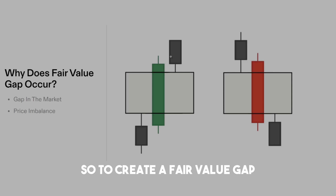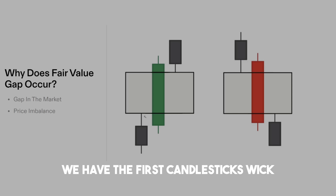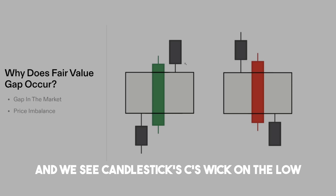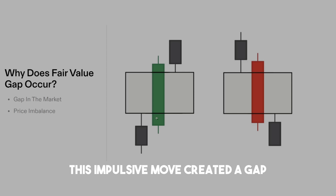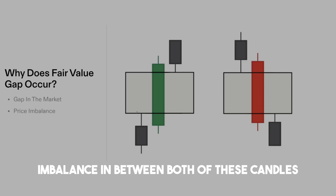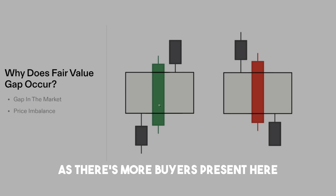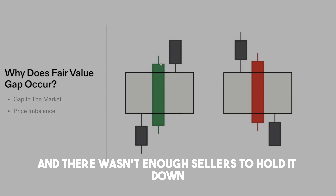To create a fair value gap, we need three candlesticks: A, B, and C. For a bullish fair value gap, we have the first candlestick's wick where it closed on the high and candlestick C's wick on the low. In between this, we see a big impulsive move. This impulsive move created a gap in between candlestick A and C, leaving imbalance as there are more buyers present that made the stock move up and not enough sellers to hold it down.